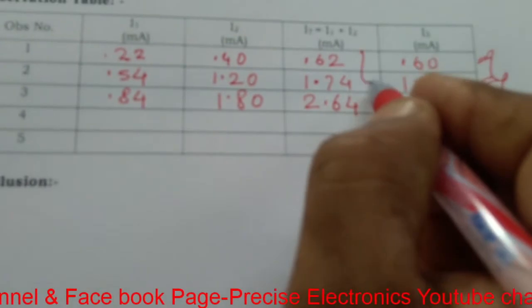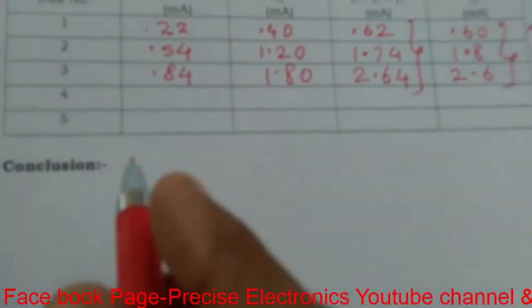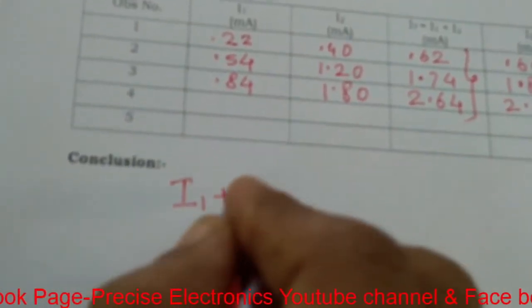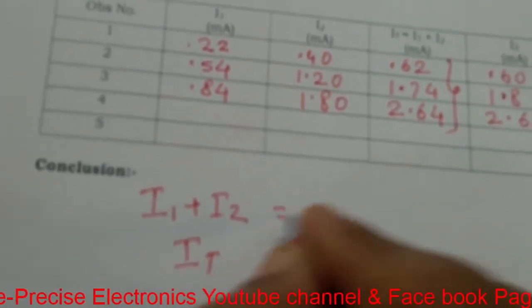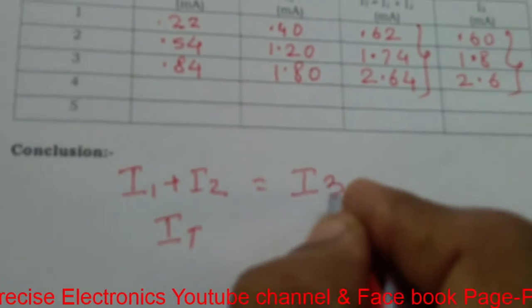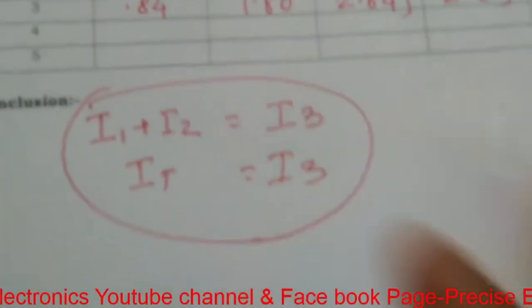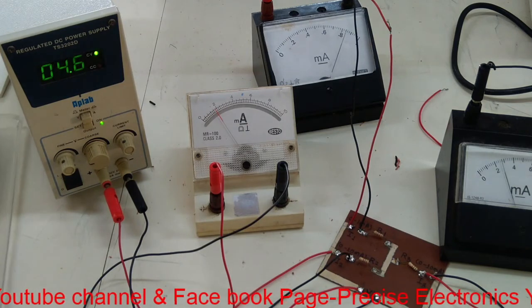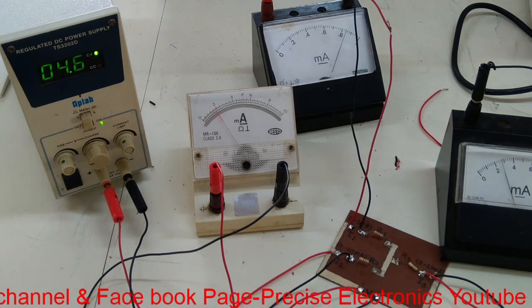From all three readings, it is clear that I1 plus I2 is almost equal to I3. We can conclude that current flowing toward the junction (I1 plus I2) equals the current flowing away from the junction (I3), thus Kirchhoff's Current Law is proved. Thanks for watching this video lecture — bye, take care. In our next video lecture we are going to study the next practical.